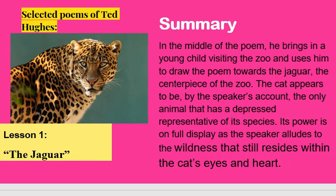In the middle of the poem, he brings in a young child visiting the zoo and uses him to draw the poem towards the Jaguar, the centerpiece of the zoo. The cat appears to be, by the speaker's account, the only animal that has not become a depressed representative of its species. Its power is on full display as the speaker alludes to the wildness that still resides within the cat's eyes and heart.